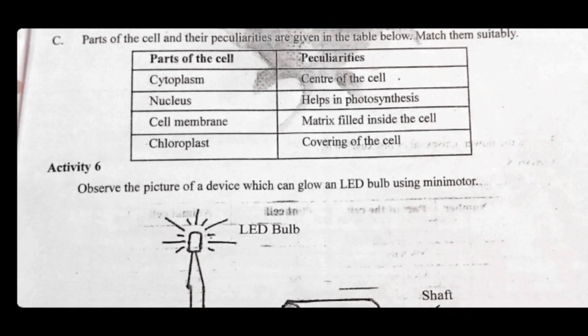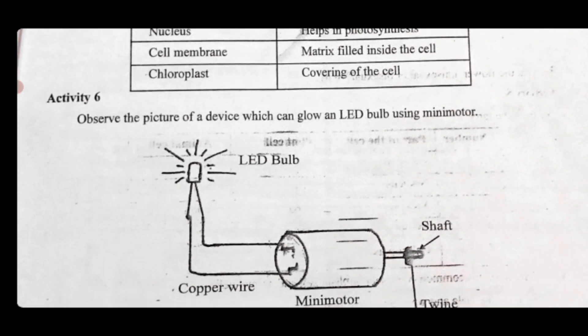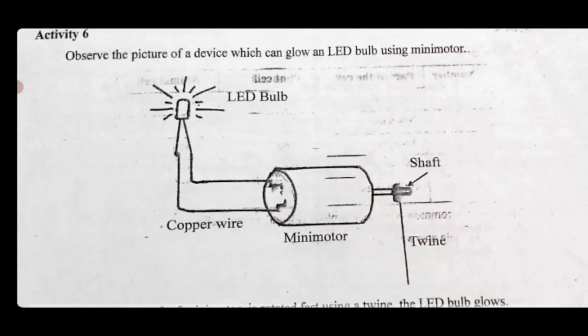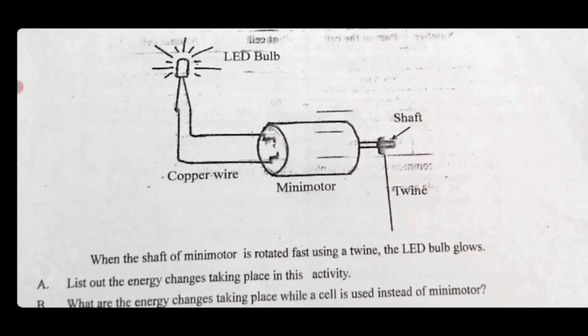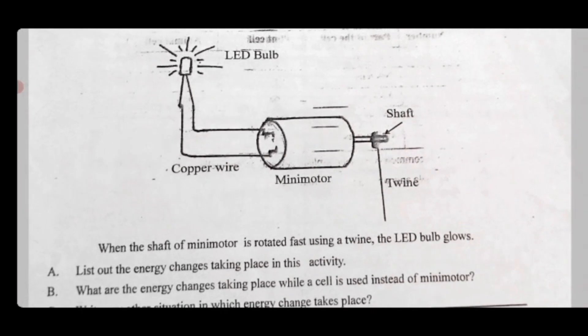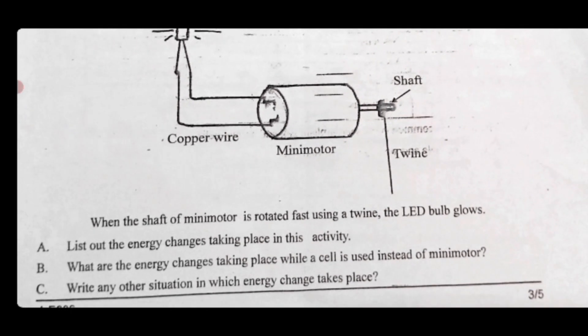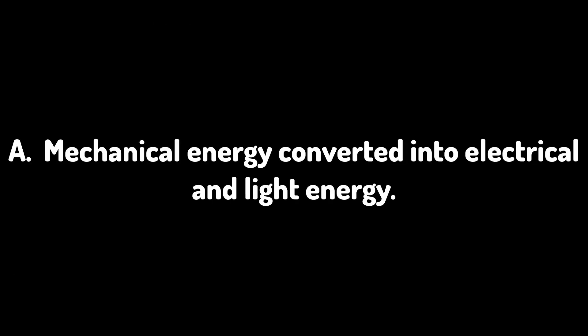Activity Six: observe the picture of a device which can glow an LED bulb using a mini motor. The components are an LED bulb, copper wire, mini motor, twine, and shaft. When the shaft of the mini motor is rotated fast using a twine, the LED bulb glows. The energy change is mechanical energy converted into electrical and light energy.